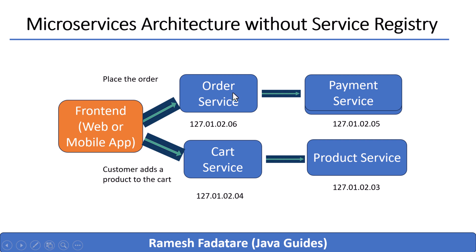Services move to new machines, they scale up and down depending on traffic. So hard-coding IP addresses or port numbers simply doesn't work. One minute the product service is at one address, the next it's somewhere else. And when you have multiple instances of the same service running for load balancing, which one should you call? This is where service discovery becomes critical.